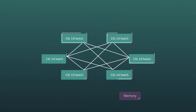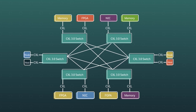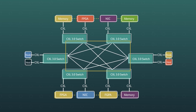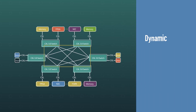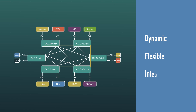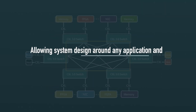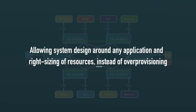This composability brings together heterogeneous compute elements, whether they are type 1, 2, or 3, into the overall system with no restrictions on how it can be architected. These fabric-enabled composed systems can be dynamic, flexible, and intelligent, allowing system design around any application and right-sizing of resources instead of over-provisioning.